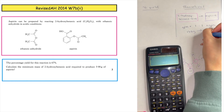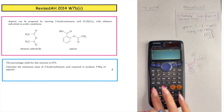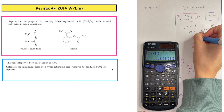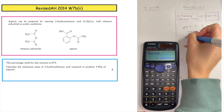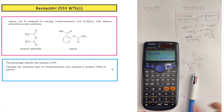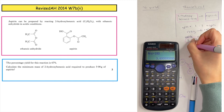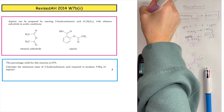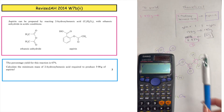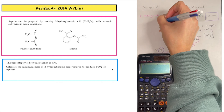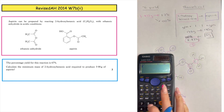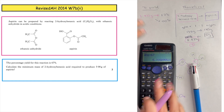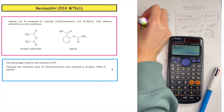The question asks us to produce 5 grams of aspirin, so we scale theoretically: 138 times 5 divided by 180 gives a theoretical mass of 3.833 grams. However, that's only if we had 100% yield. We know the percentage yield is 67%, so we scale up by cross multiplying: 3.833 times 100 divided by 67, giving a final mass of 5.72 grams of 2-hydroxybenzoic acid to put into the reaction.